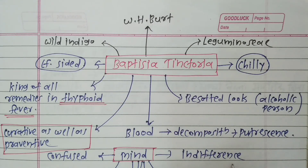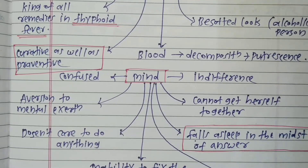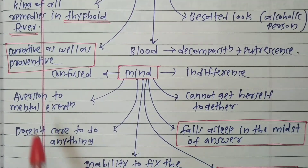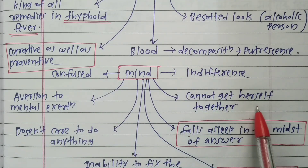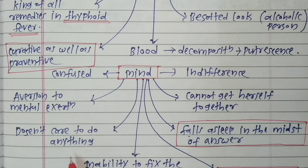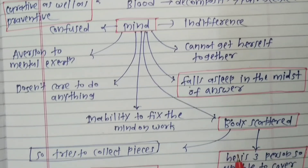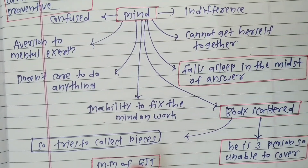In the mind region, characteristic features include indifference and a confused state of mind. It also causes aversion to mental exertion. The patient cannot get herself together — most characteristically, the patient falls asleep in the middle of answering, which is the reverse of Arnica. The patient does not care to do anything.